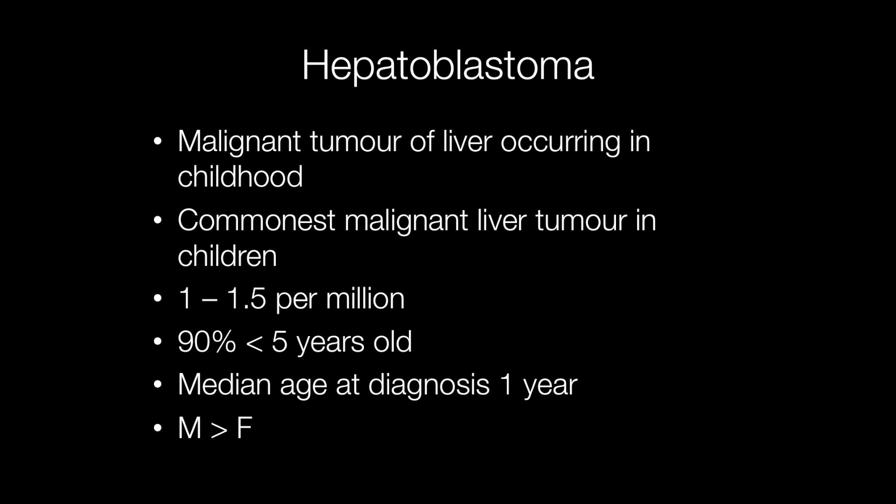Hepatoblastoma is a malignant tumour of the liver occurring in childhood and it is the commonest malignant liver tumour in children. The incidence is only between one and one and a half per million. 90% of hepatoblastomas occur in children under the age of five, the median age at diagnosis is one year, and males are affected almost twice as frequently as females.